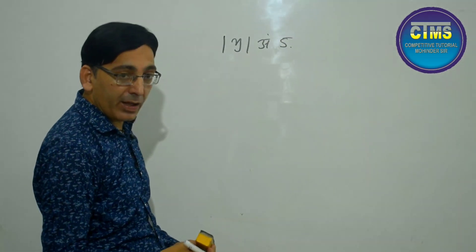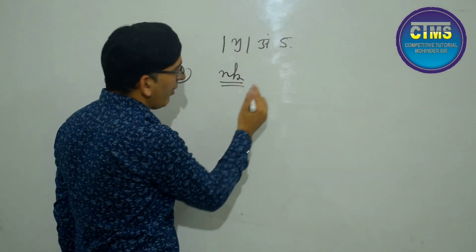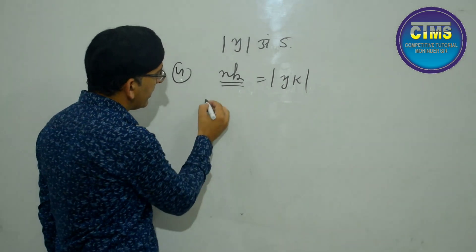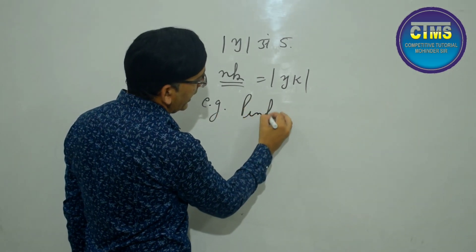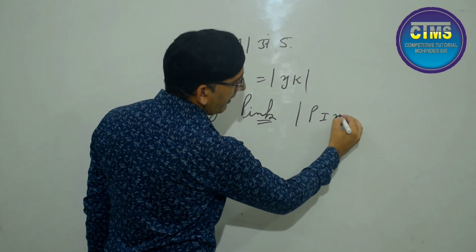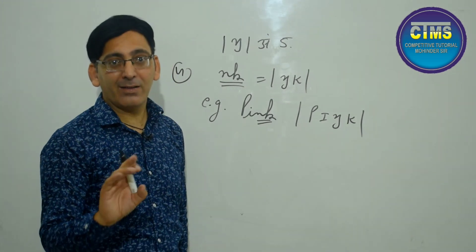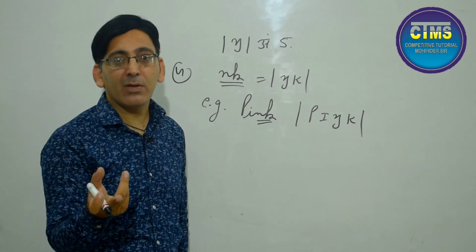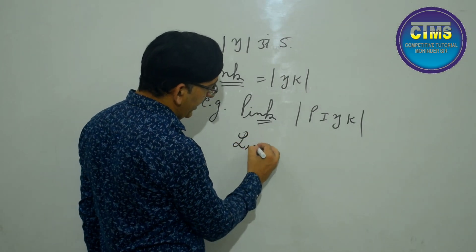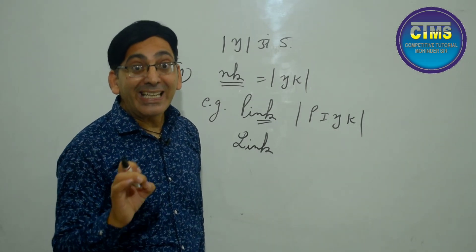Fourth rule: this applies when you get the combination N-K anywhere. Wherever you get N-K, it will always produce ŋk — both ŋ and K together. For example: P-I-N-K — N-K is present, the small 'i' gives /ɪ/, and the result is 'pink', not 'pink' with a separate N. It's 'pink'. Similarly, L-I-N-K — it's 'link', not 'link' separately — it's 'link'.